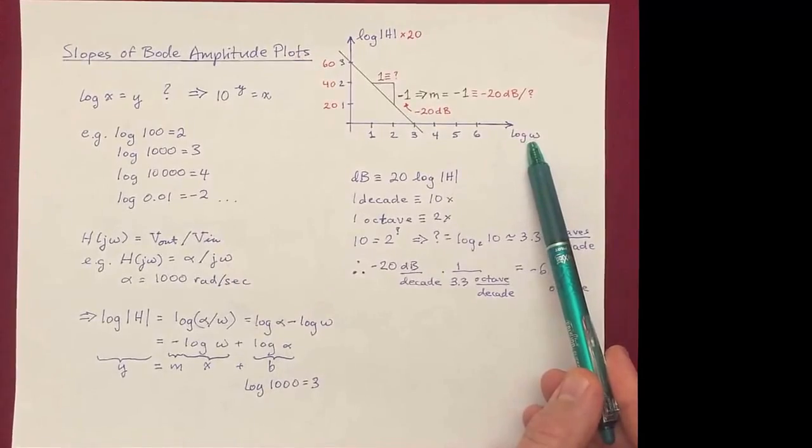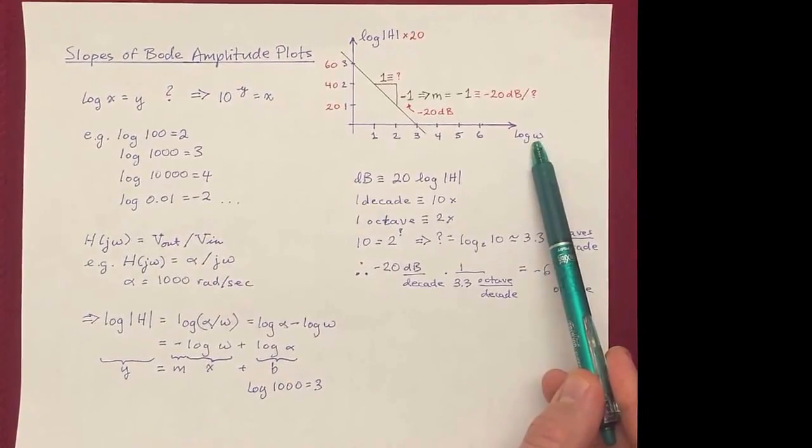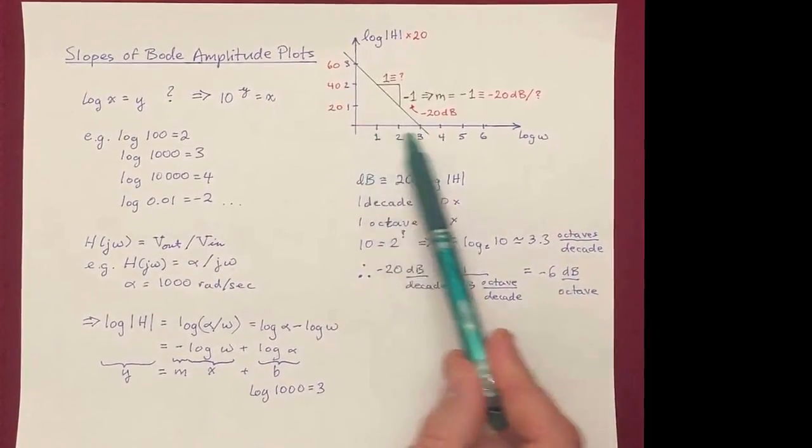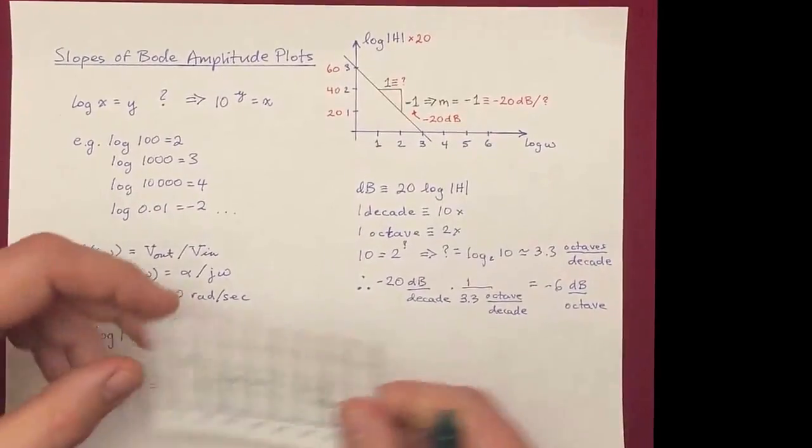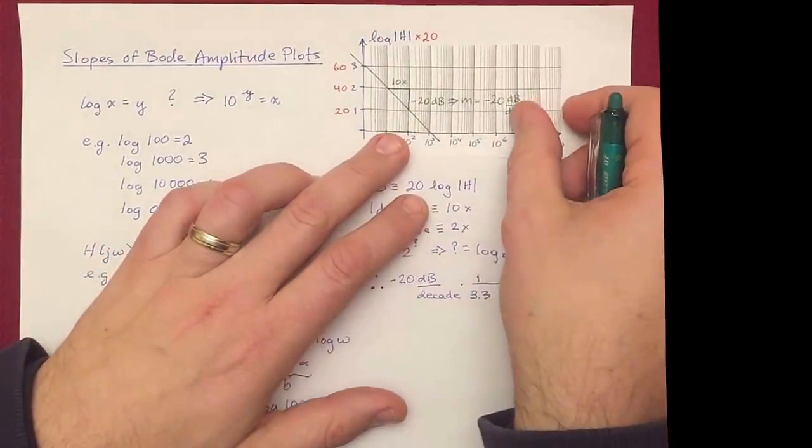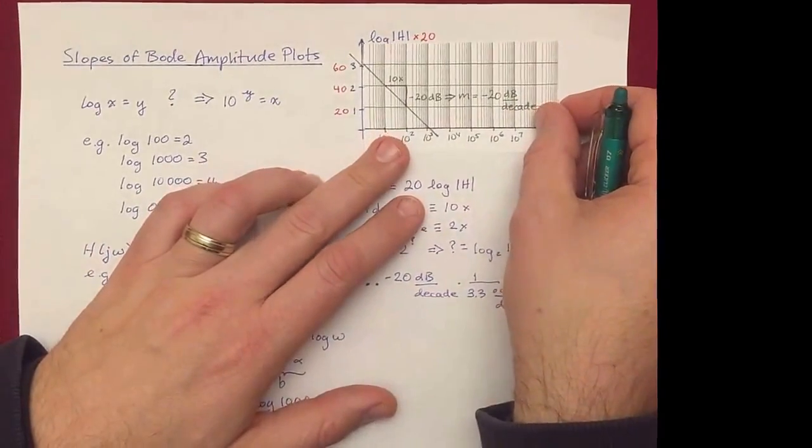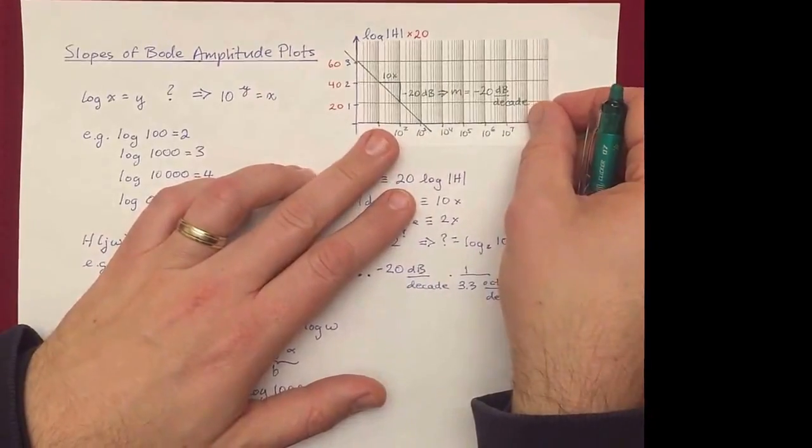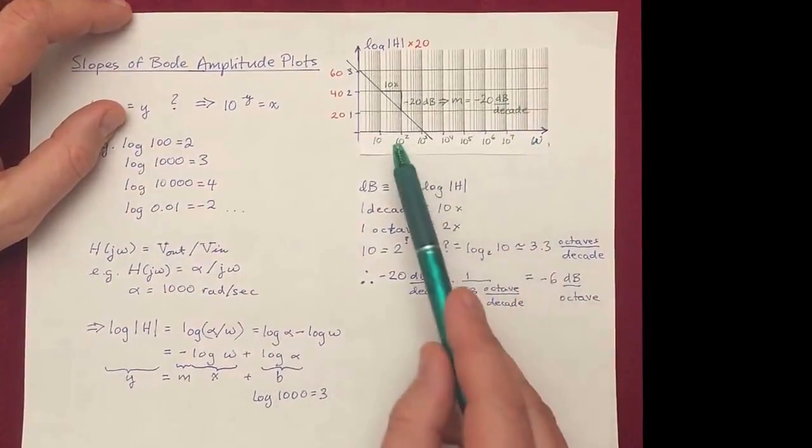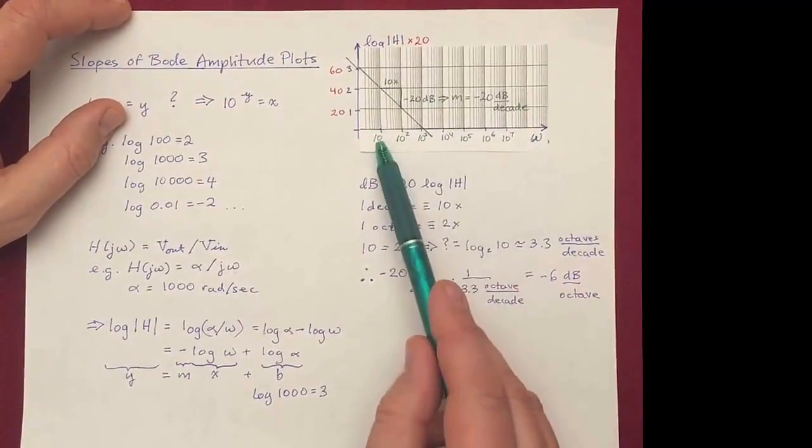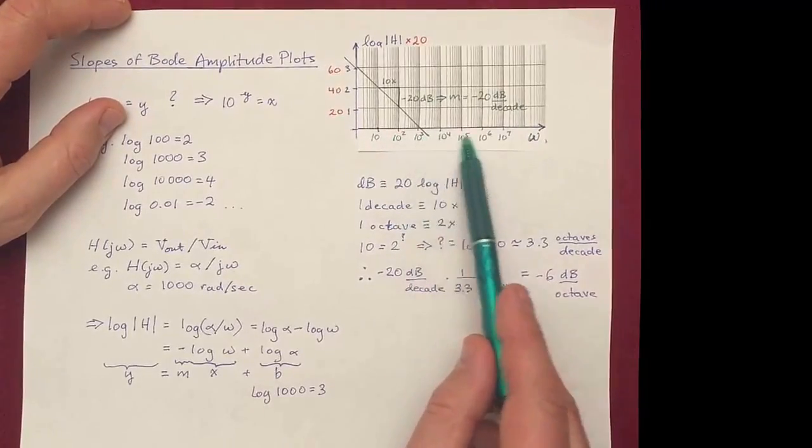So a way around that is to, instead of plotting log of omega here, we can plot just omega, but we'll plot it on a semi-log paper. So I have an example here. So this paper, we've taken the x-axis, and we've redrawn it as omega. And the 1, 2, 3, 4 changed to a 10 to the 1, 10 to the 2, 10 to the 3, etc.